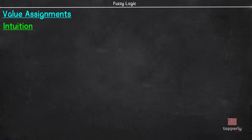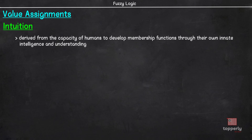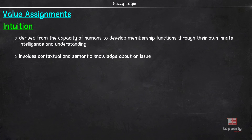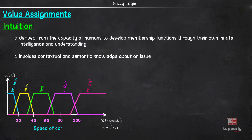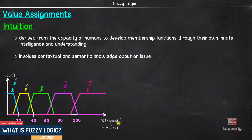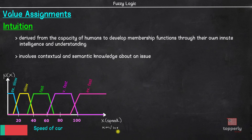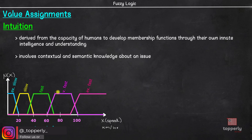First, let us see about the method of intuition. In this method, the membership functions are developed based on innate intelligence and understanding we have as humans. Intuition involves the knowledge of context and the concepts we have acquired through experiences. As an example, consider the membership functions for the fuzzy variable speed which we discussed in lecture 1 of this playlist. The figure shows various shapes on the universe of speed as measured in km per hour. Every curve is a membership function corresponding to various fuzzy variables such as extremely slow, slow, fast, etc. Keep in mind that the meaning of these curves change according to context and the person developing them.